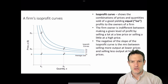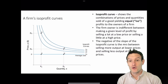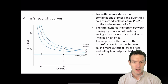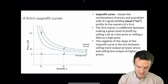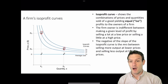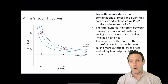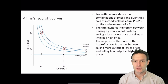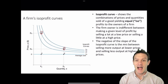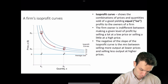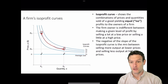With isoprofit curves, we're showing the combination of price and quantities sold yielding equal profits to the owners of the firm. The firm owner is therefore indifferent between making a given level of profit by selling a lot at a low price or selling a little at a high price. The negative of the slope of the isoprofit curve is the marginal rate of substitution between selling more output at lower prices and selling less output at higher prices. Moving between points A and B along isoprofit curve pi 2, we consider that slope.